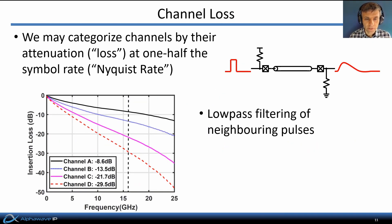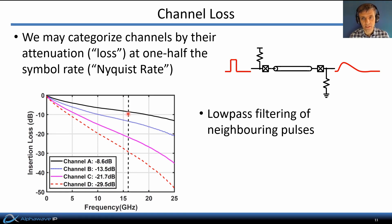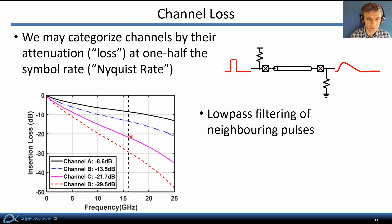We may categorize channels by their attenuation or loss at one half the symbol rate — also called the Nyquist rate. In this example plot at 16 gigahertz, there are four different channels with different lengths. Channel A is a relatively short link with less than 10 dB loss at the Nyquist rate; such links are often referred to as extra short reach (XSR) or very short reach (VSR) links. Channel C has more loss and fits into the category of medium reach (MR) links, while channels with 30 dB or more loss at Nyquist are considered long reach (LR) channels.